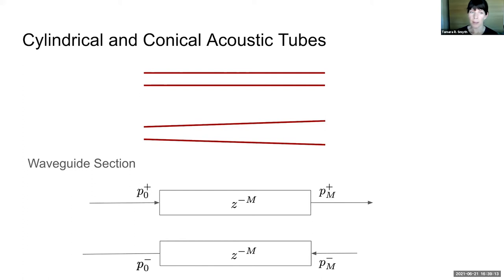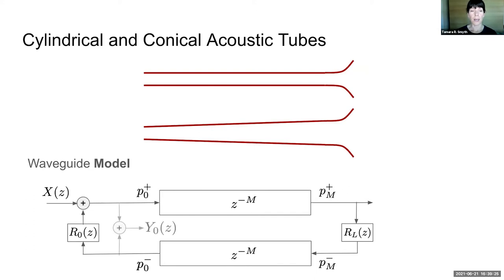It's well known that the wave-guide section is well-suited to modeling one-dimensional wave propagation in cylindrical and conical tubes. We can account for the boundaries with reflection functions, have an input, and tap the output either at the base of the acoustic tube or perhaps at the output.